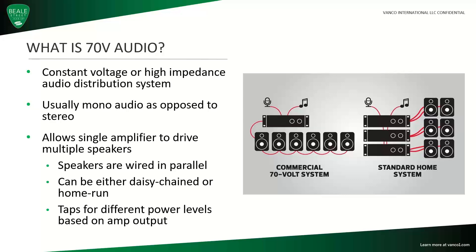When we talk about 70 volt audio, you'll also hear it referred to as constant voltage systems, high impedance audio systems, but most commonly referred to in the US or Canada as 70 volt audio. A couple of things: it's almost always a mono system. The goal of a 70 volt system is typically music coverage as opposed to stereo separation, imaging, and details like that. It's all about good music coverage. One of the really nice features is it allows us to use one amplifier, or fewer amplifiers, to cover a very large area.